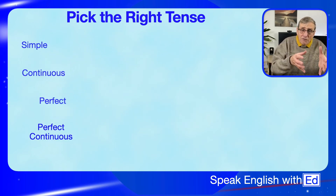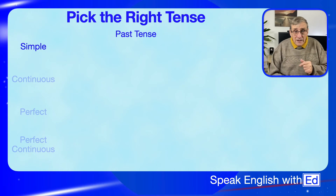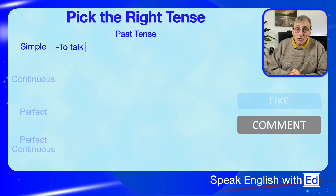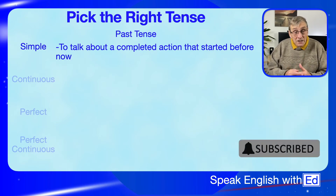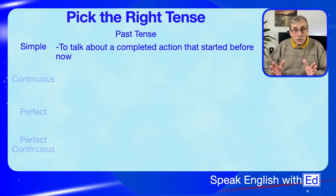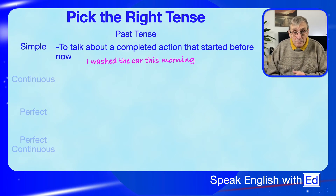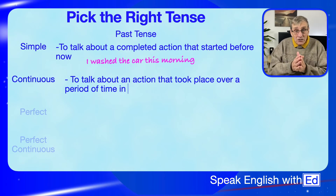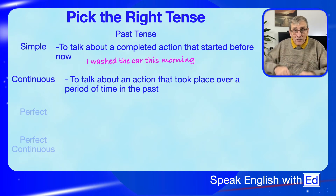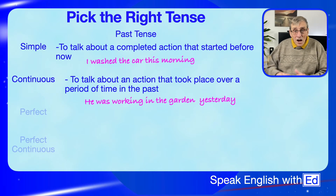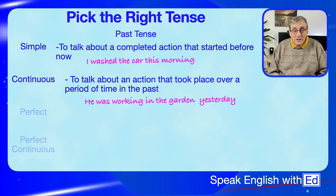Now let's look at these four styles in the past tense. The past simple is used to talk about an event which started and completed before now: 'I washed the car this morning' — it started and it's completed. The past continuous tense is used to talk about an action that took place over a period of time in the past: 'He was working in the garden yesterday' — a continuous action over a period of time.